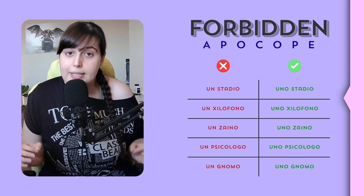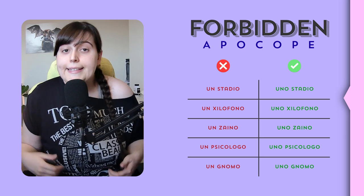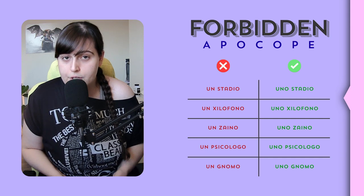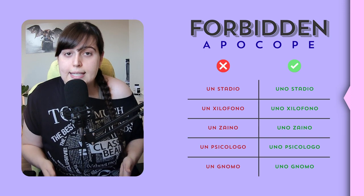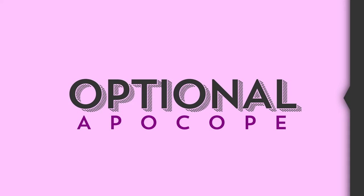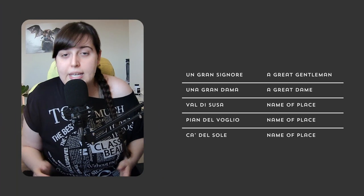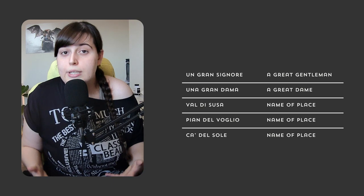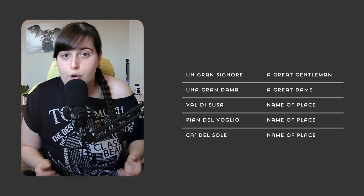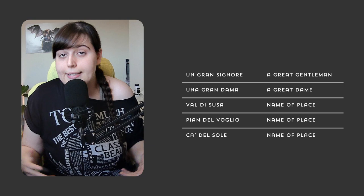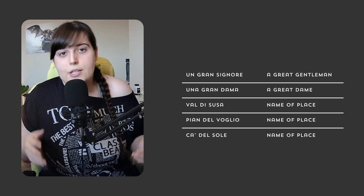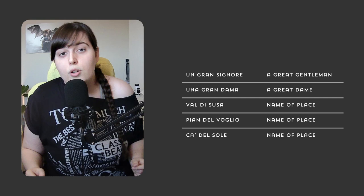However, this rule does not apply to 'buono', titles indicating social position or profession, and fixed expressions, for they are fixed by definition. So, for example, we can say 'signor Stefano'. Every time apocope is not mandatory nor forbidden, we can pick what we prefer. For example, it's common to apply apocope to the adjective 'grande' (big, great): 'un gran signore' (a great gentleman) or 'una gran dama' (a great dame). Or in some place names, such as 'Val di Susa', 'Pian del Voglio', or 'Cade il Sole'.